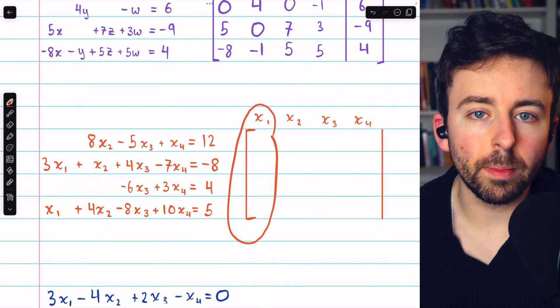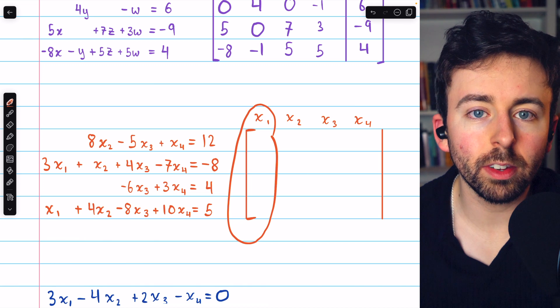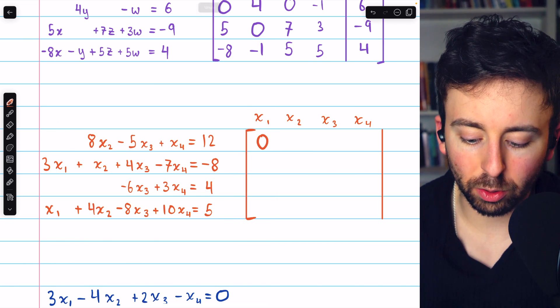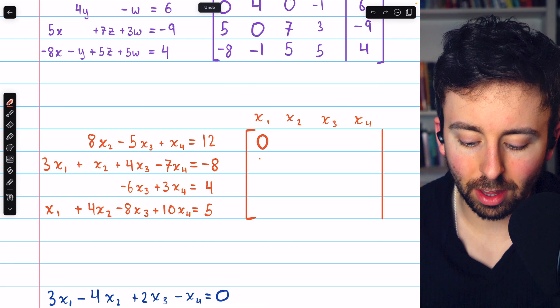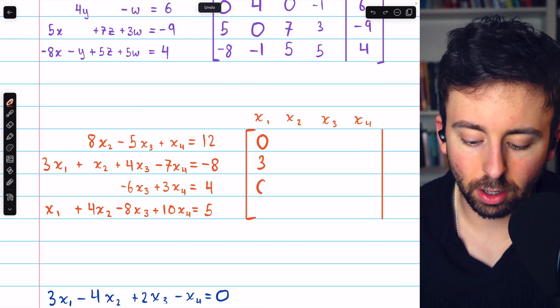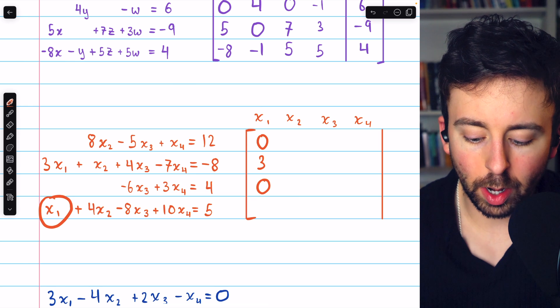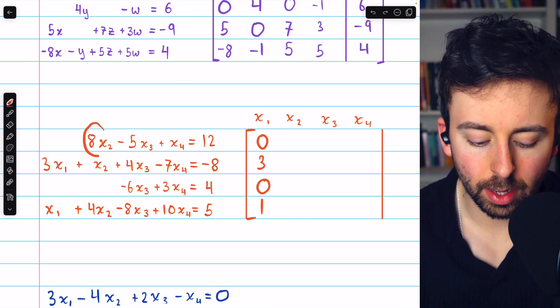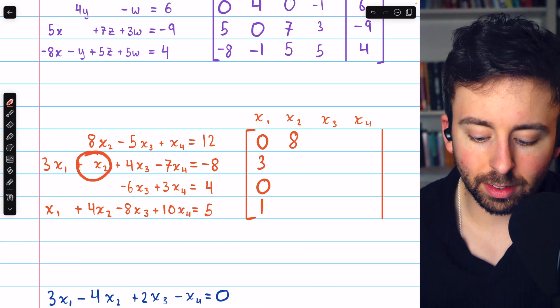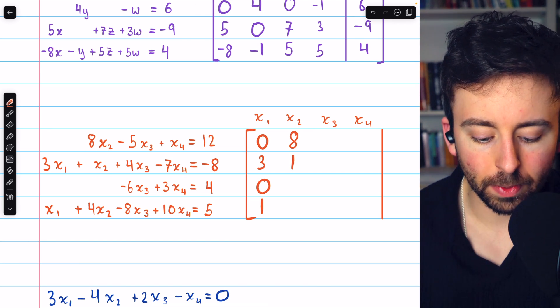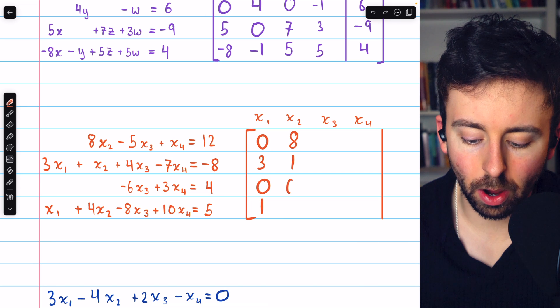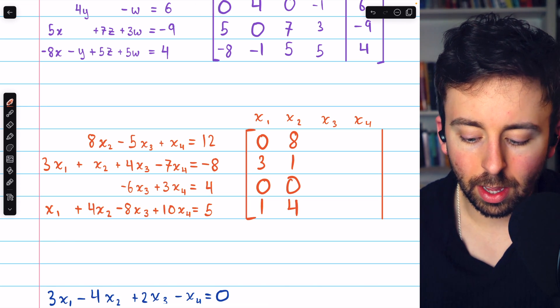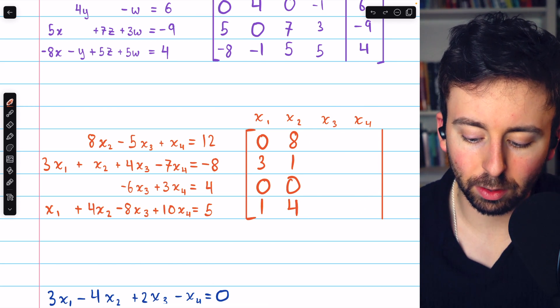The first column of our augmented matrix will have the coefficients of the first variable, x1. The first equation has no x1. The second equation has three x1s. The third equation has no x1. And the fourth equation has one x1. Then we move on to the x2 column. The first equation has eight x2s. The second equation has one x2. The third equation has no x2s. And the fourth equation has four x2s.